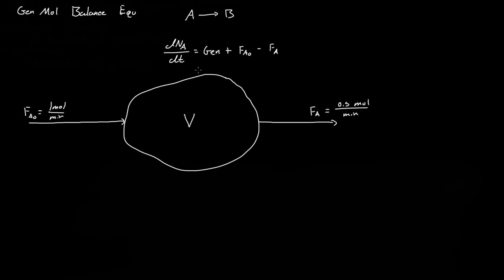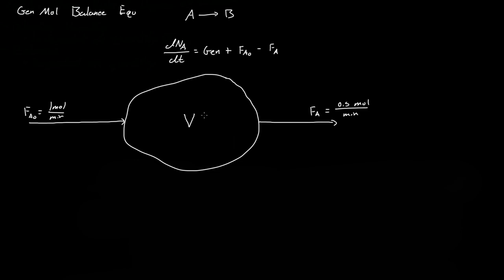If we assume the system is at steady state, that means the moles of A inside the system are not changing with respect to time, even though A is being consumed. So dNA/dt equals zero. With FA0 equal to one mole per minute and FA equal to 0.5 moles per minute, the generation term must equal negative 0.5 moles of A per minute — meaning 0.5 moles of A are being consumed inside the system.